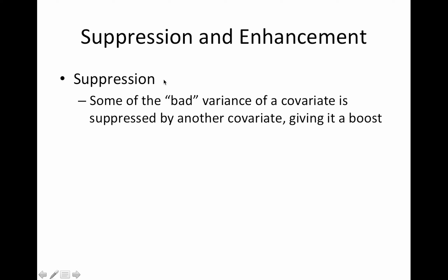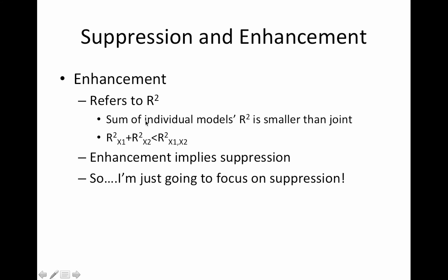Suppression corresponds to the betas. Some of the bad variance of a covariate is suppressed by another covariate giving it a boost. If your Venn diagram, I know I'm still using the Venn diagram, so I'm trying to explain them more completely. In this case, X2 is interfering with X1, but most of the interference is kind of good. It's taking away this part of X1 that's not important in terms of explaining Y. It allows X1 to do a better job. That is suppression. It's suppressing, it's counterintuitive because it seems like it would be enhancing, but it's basically suppressing this chunk of variability.